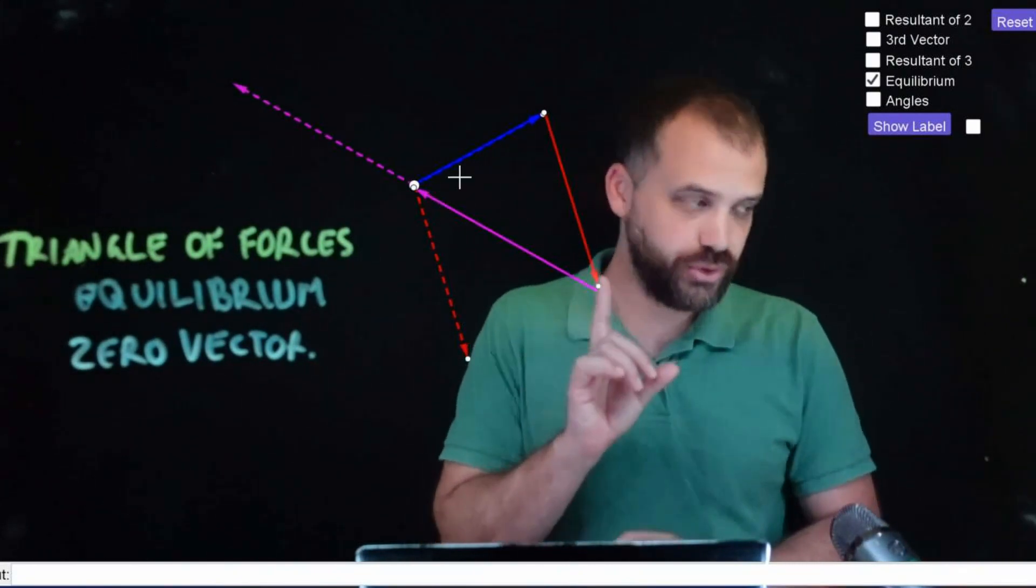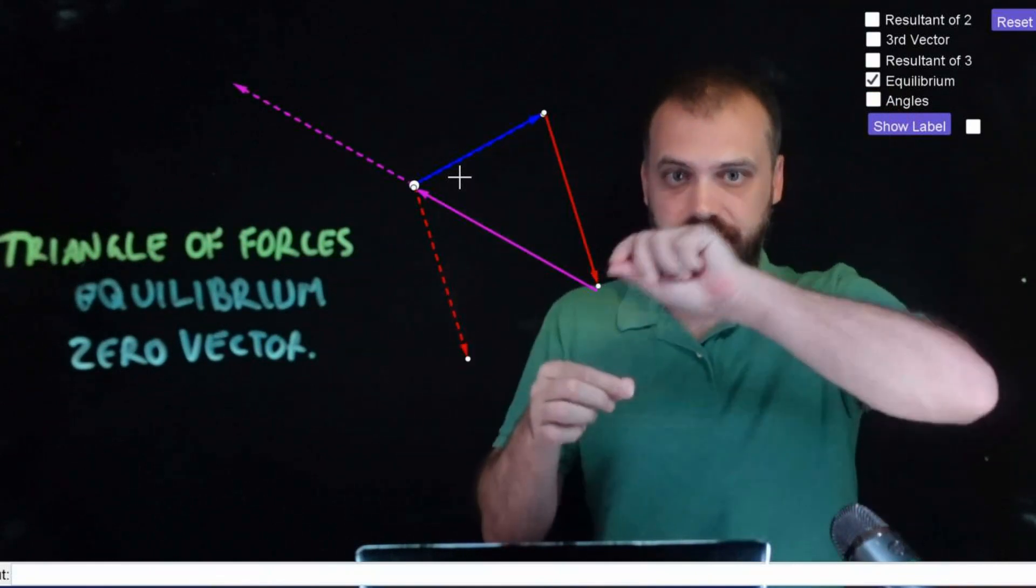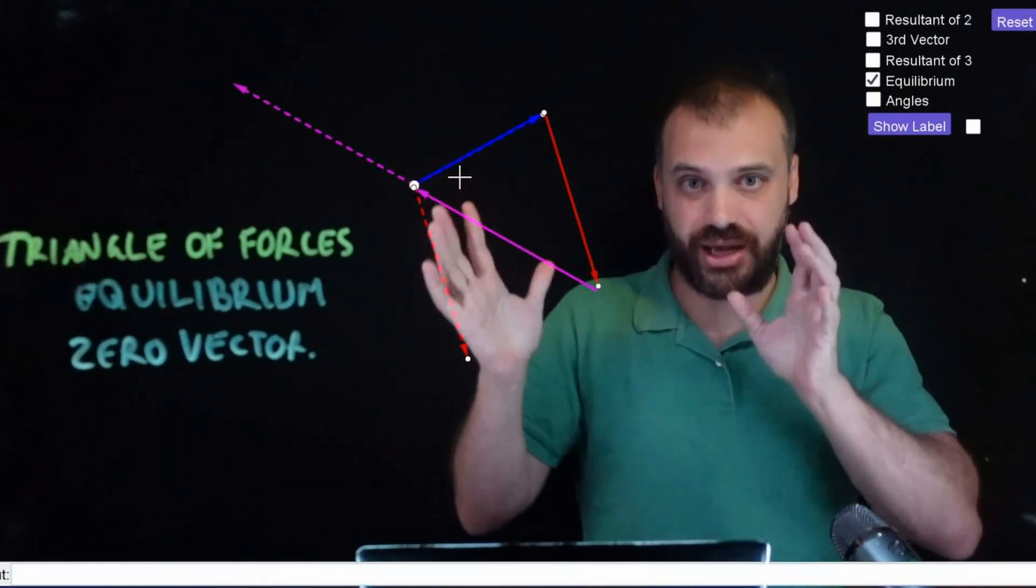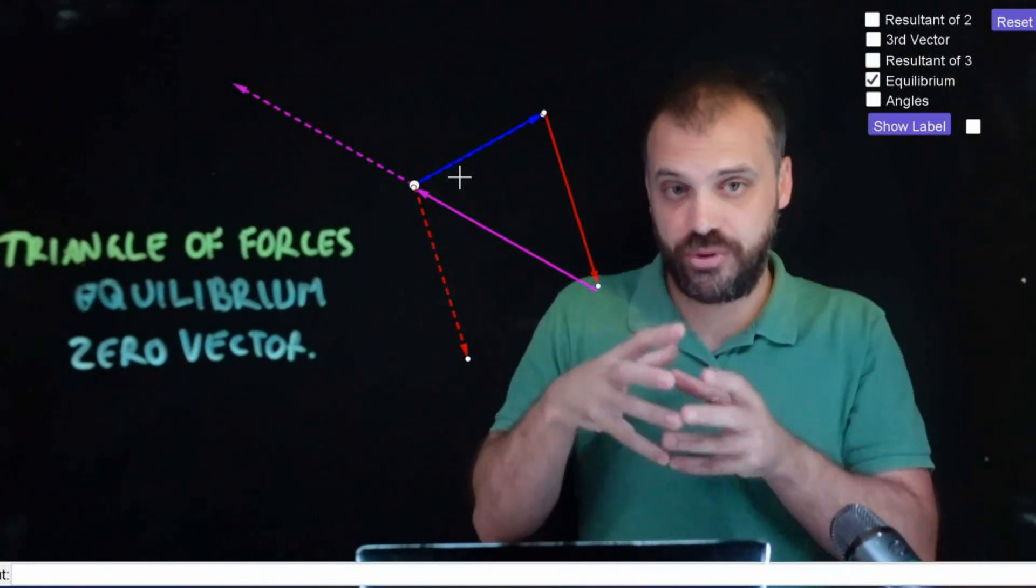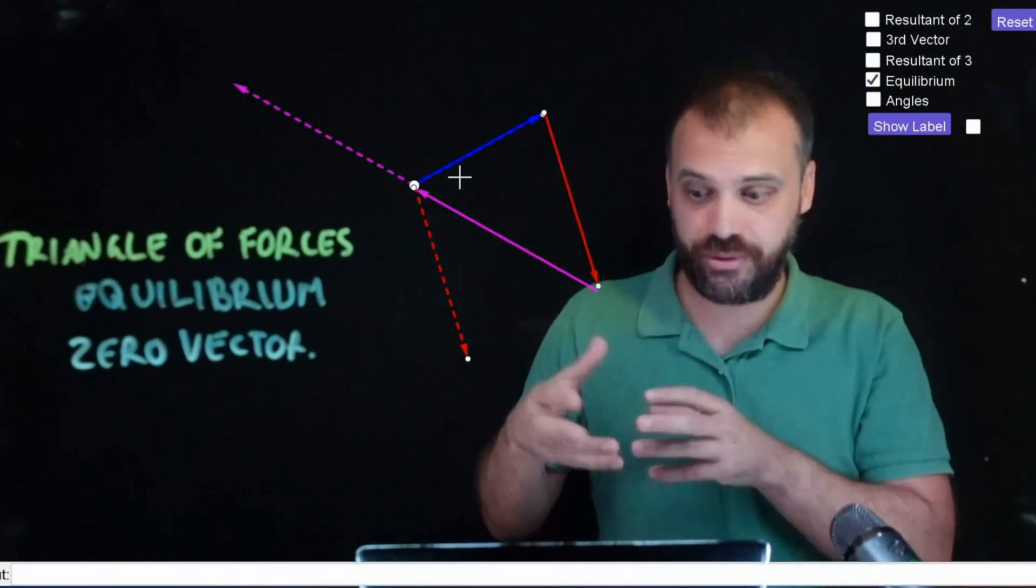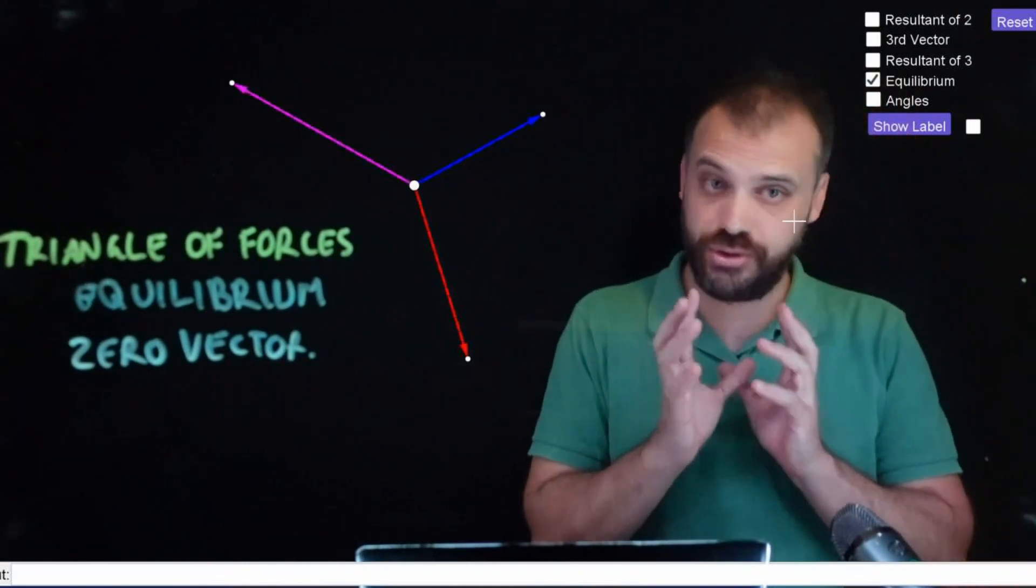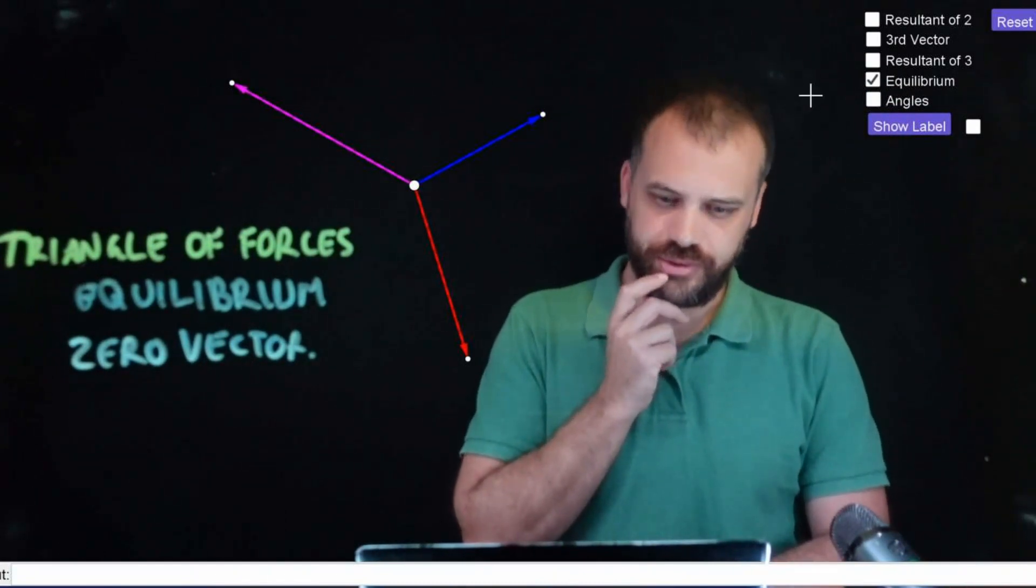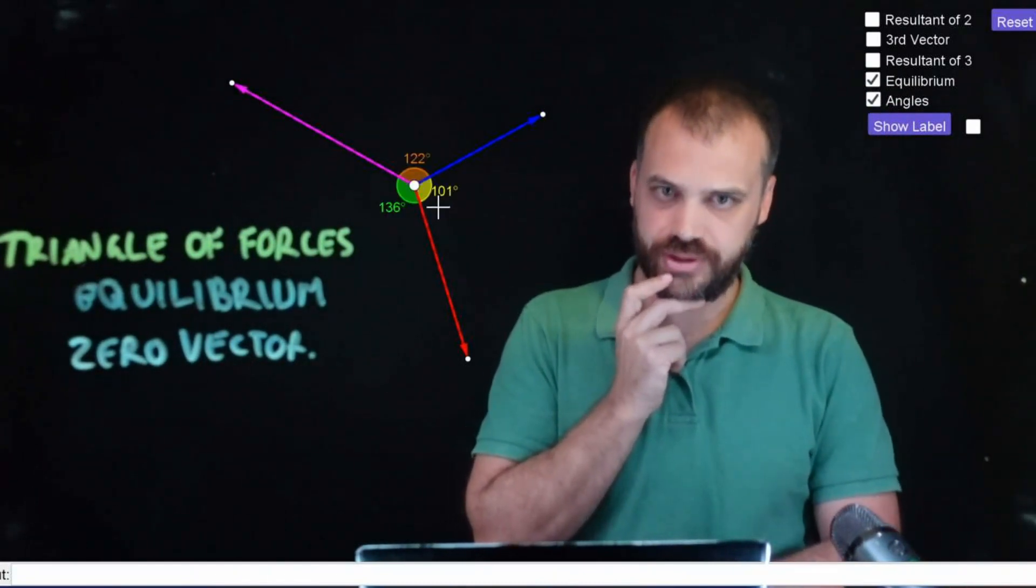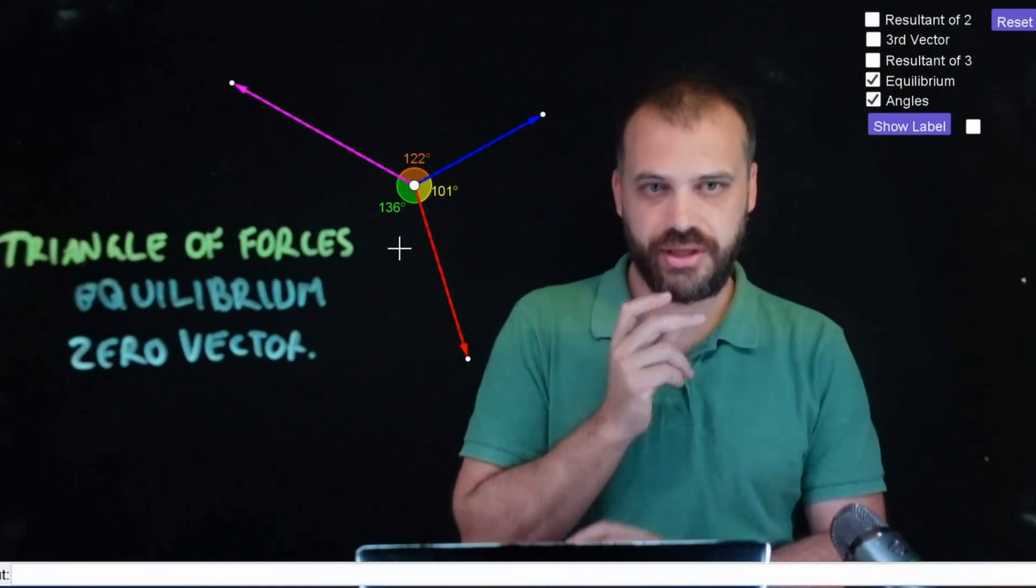Now, what you need to take away from this is an ability to take three forces acting on an object and move them around like I've been moving around, but moving them around on a pen and paper rather than doing it here on my little applet. Now, this is not always easy. So, watch carefully what's happening here. Let's put some angles on this thing. We have 101 degrees, 122 degrees and 136 degrees.